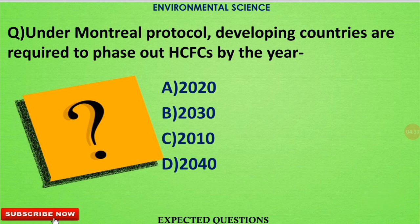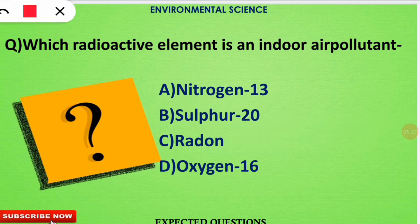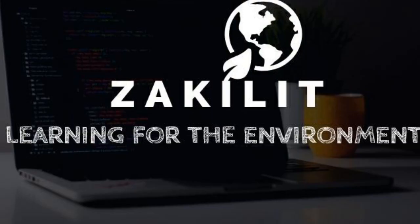The next question is related to the Montreal Protocol: under the Montreal Protocol, all developing countries are required to phase out HCFCs — hydro-chlorofluorocarbons — by which of the following year? The next question: which radioactive element is an indoor air pollutant? This question has been asked several times. The correct option is option C — Radon is the radioactive element which is an indoor air pollutant.